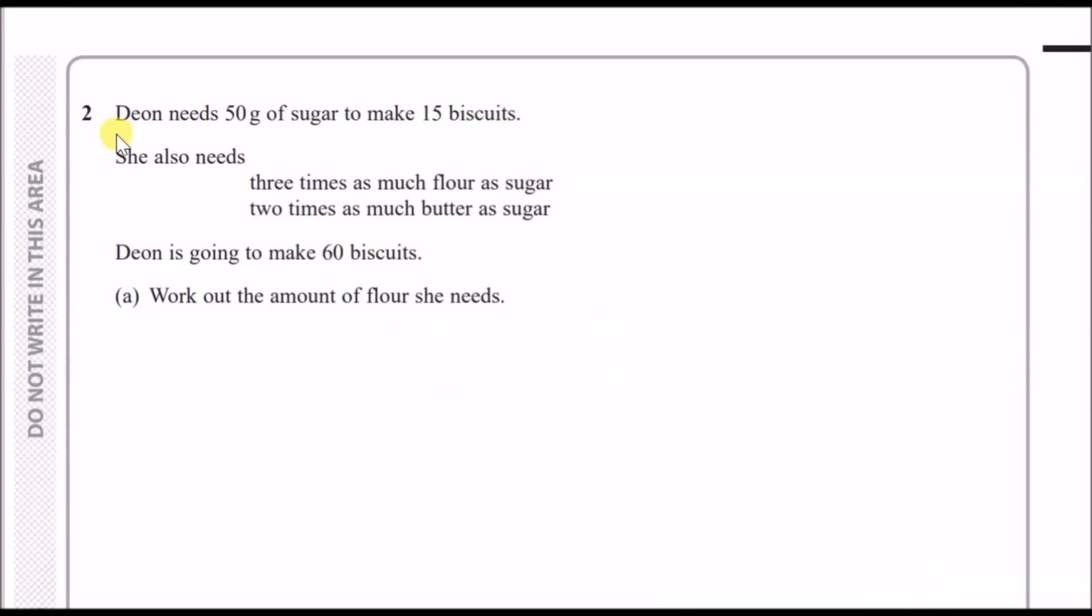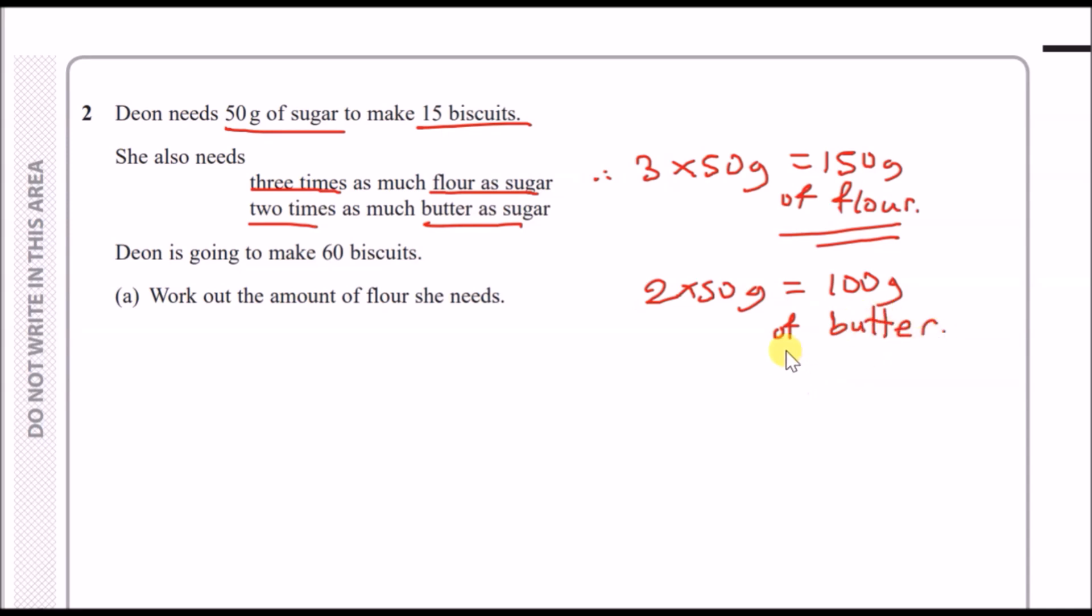Number two: Dean needs 50 grams of sugar to make 15 biscuits. She also needs three times as much flour as sugar, so if you've got 50 grams sugar that means 3 × 50 gives us 150 grams of flour. For the second part, it's just two times as much butter as sugar, so 2 × 50 gives us 100 grams of butter.